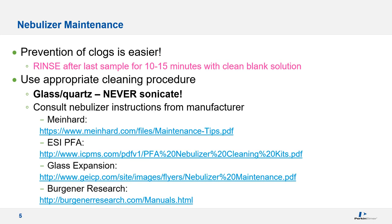I've included a few relevant links to the commonly used nebulizer maintenance pages. One key thing to remember is to never sonicate a quartz or glass nebulizer, because sonication will destroy it. You can also use a back-flush device — just make sure it is appropriate for your particular nebulizer. You can also soak the nebulizer in a special cleaning solution such as RBS 25, which is recommended by some nebulizer manufacturers. And finally, always have a spare nebulizer; you won't be able to run any samples until you get a new one.